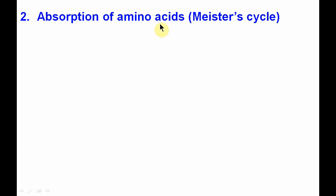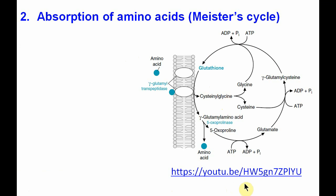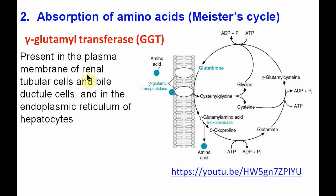The next important function is the absorption of amino acids, called the Meister cycle or gamma-glutamyl cycle. This cycle has already been discussed during the digestion and absorption of amino acids. The important thing to note is that the amino acid which is linked to glutathione involves the enzyme gamma-glutamyl transferase, that is GGT. This enzyme is present in the plasma membrane of renal tubular cells and bile ductile cells, and in the endoplasmic reticulum of hepatocytes. Therefore, estimation of gamma-glutamyl transferase is very important in hepatobiliary diseases and alcoholic liver diseases.